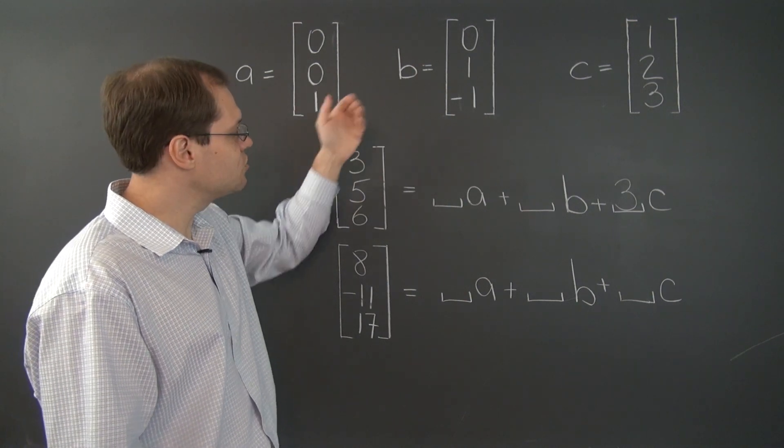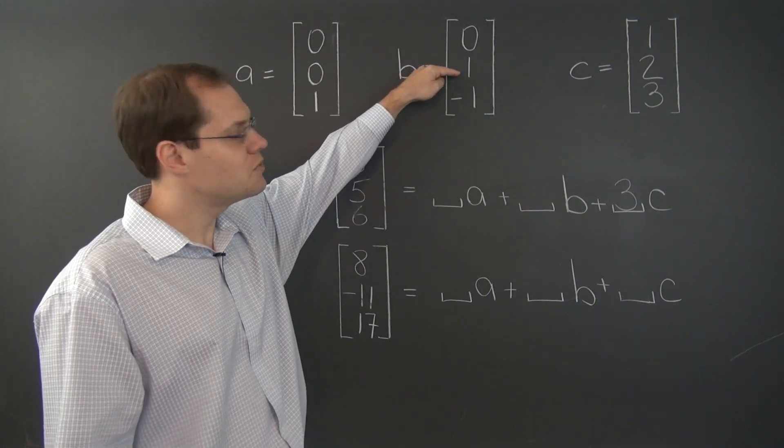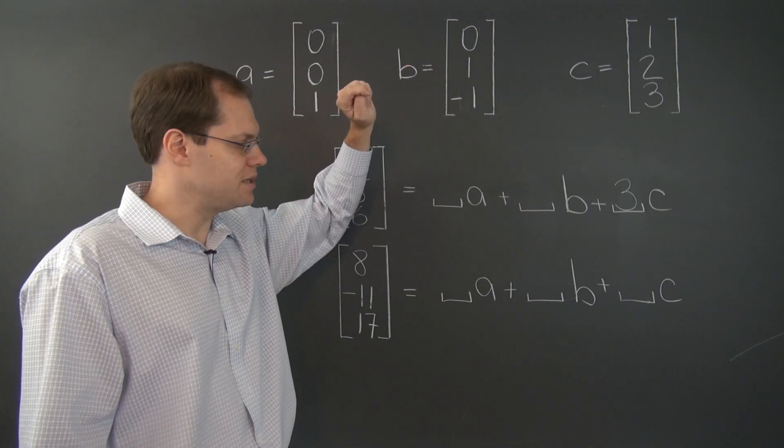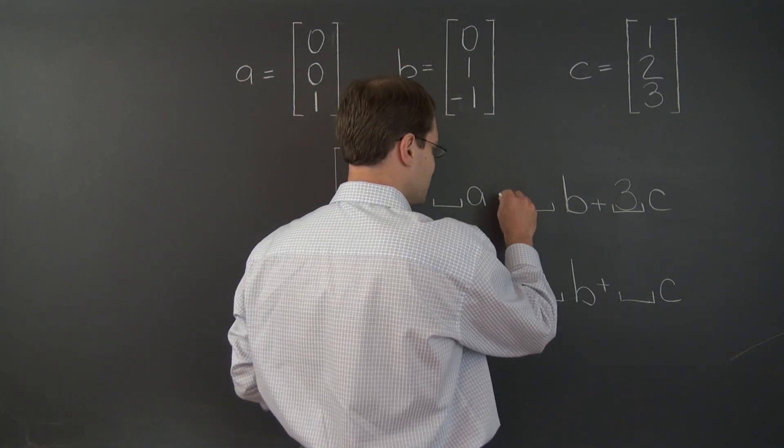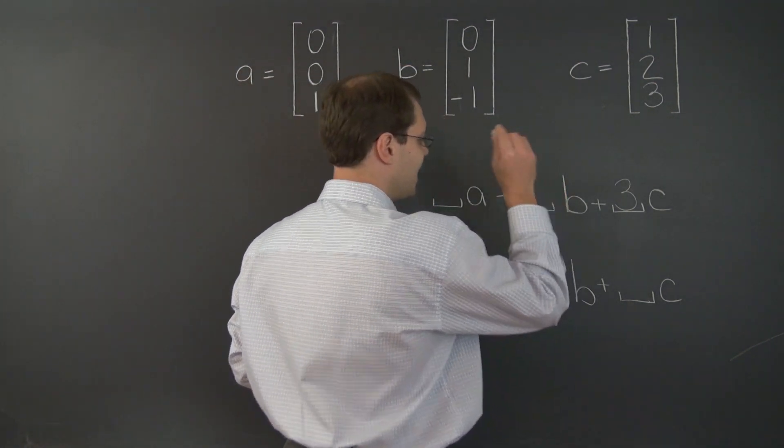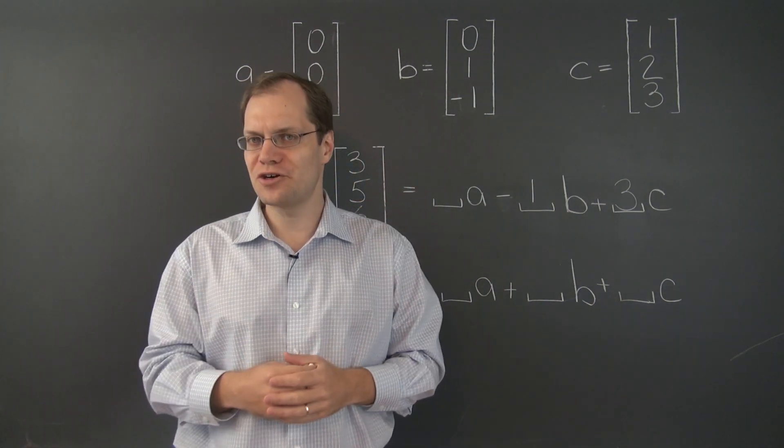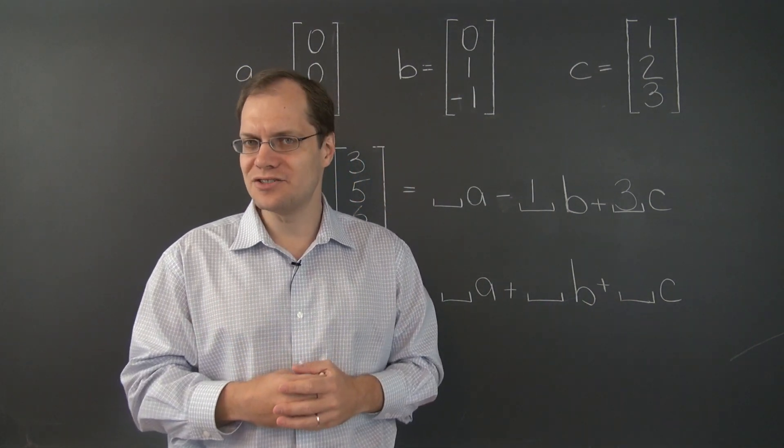And how do we get from six to five with the vector B? Well, we take minus one of B. So minus one of B. And we have determined two of the three coefficients. And now the remaining one is a cinch.